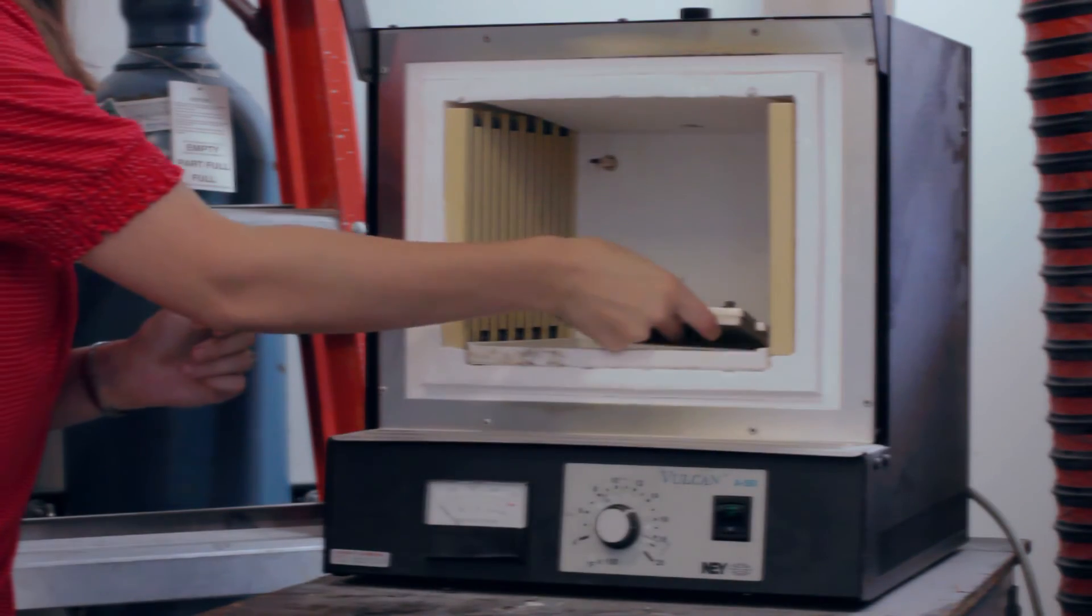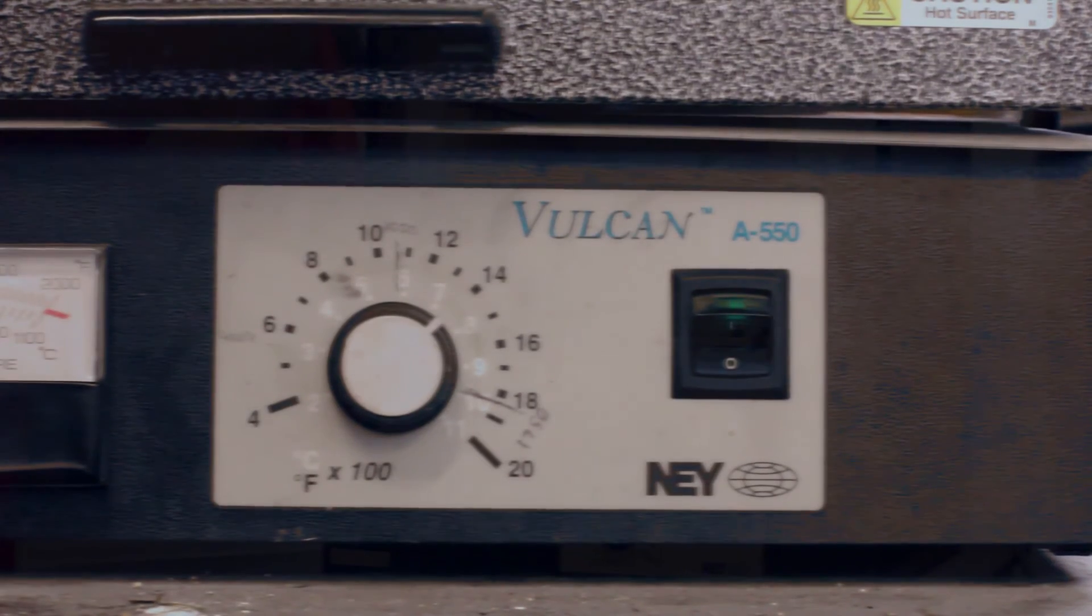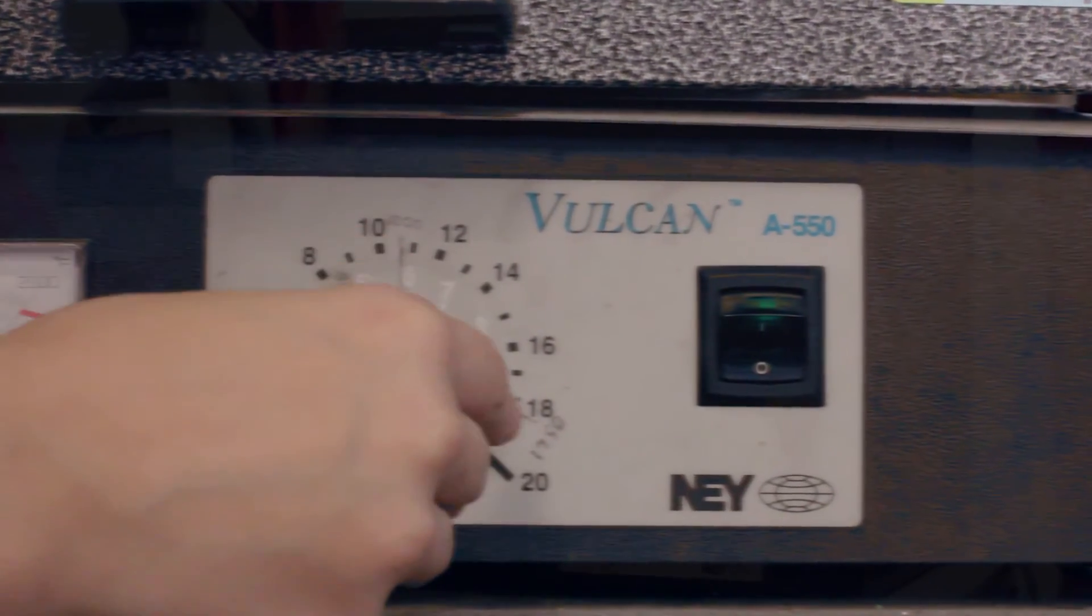We will place the mold in an oven and heat it to 550 degrees Celsius, sufficient to lock in the shape.